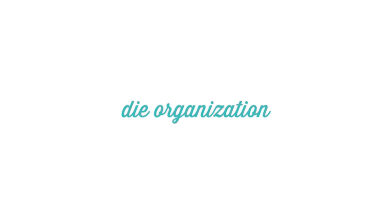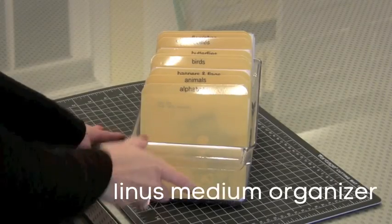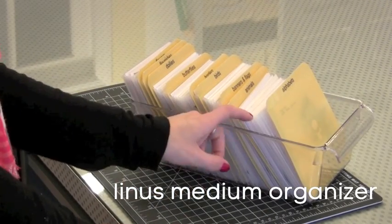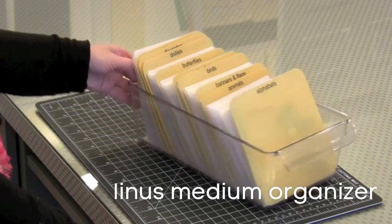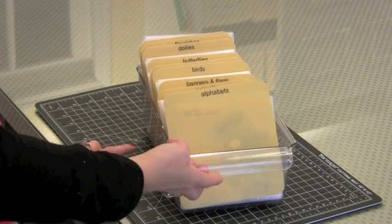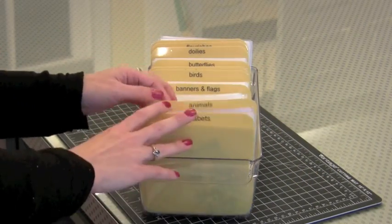For die organization I've showed this before too. I'm going to put a little link here so you can see a more complete video about this. For my dies I like to keep them in a smaller container. This is the Linus Medium Organizer. It's just a nice size. It's got the handle on the front and it fits the die storage pockets I use perfectly.